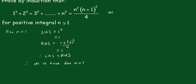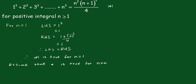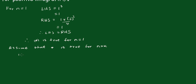Now, we have to assume that the statement is true for some value k, for n equals some value k. That is, 1 cubed plus 2 cubed plus 3 cubed plus all the way up to k cubed is equal to k squared times k plus 1 all squared over 4. I'll refer to that as the assumption statement.